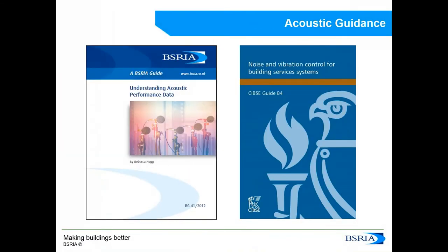There are numerous standards and guidance documents available. One is a visual guide on understanding acoustic performance data, which helps when reading a data specification sheet. Another useful reference, though 104 pages long, is CIBSE Guide B4, which covers a lot of information about noise and vibration control for building services systems.